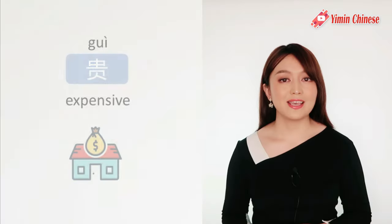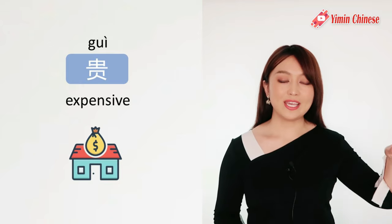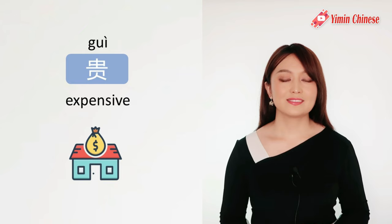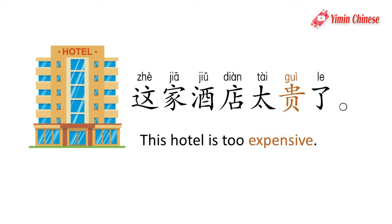贵, expensive, is a falling tone: 贵. 比如说, 这家酒店太贵了, this hotel is too expensive: 这家酒店太贵了.